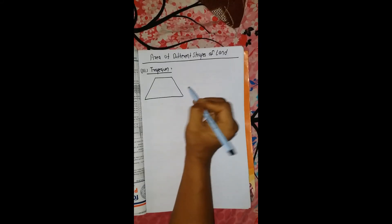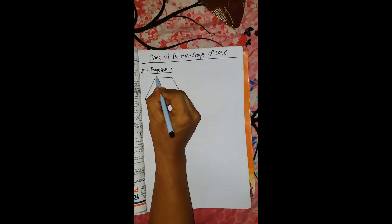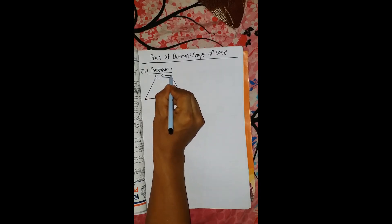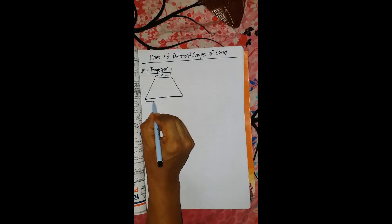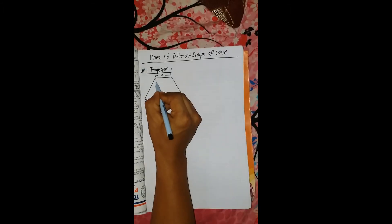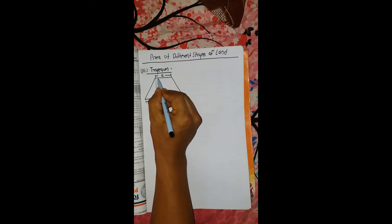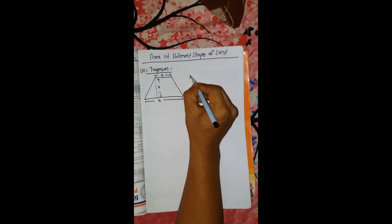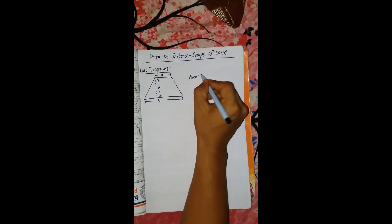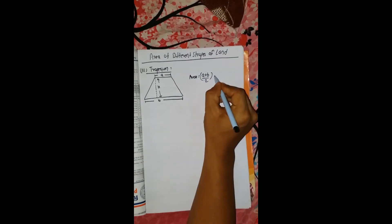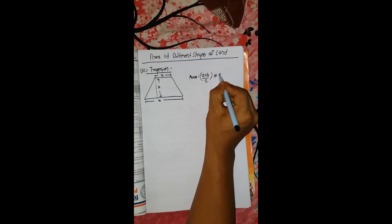Now for a trapezoid. Suppose the length of side A and the length of side B are the two parallel sides. The area formula is: area equals (A plus B) divided by 2, multiplied by the height.